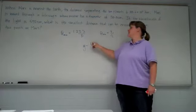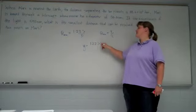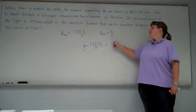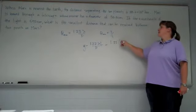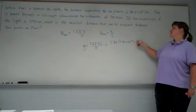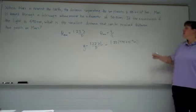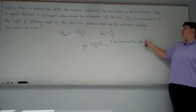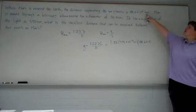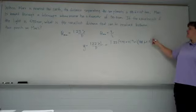And we find that Y is equal to 1.22 lambda L over D. So we know the wavelength is 590 nanometers. Nano, remember, is 10 to the negative 9. L is 88.6 kilometers, so that would make it 10 to the ninth meters.